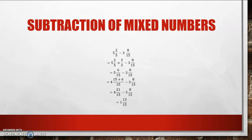Let's continue with subtracting of mixed numbers. I have 5 and 2/5, subtracting 3 and 8/15. Are my denominators the same? No, they are not. I need to get them the same. So I will multiply 2/5 by 3 over 3, which in the end will give me 6/15. Now, 8 is more than 6 and I need to subtract it from 6, so I will have to go and borrow a whole from the 5. And a whole is 15 over 15. That's where I got my 15 plus my 6 from.